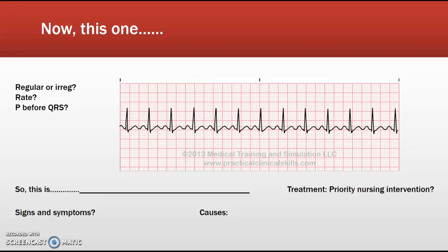Your priority here is again to check the patient and get vital signs. It's important to know how this rhythm is perfusing — is the patient able to maintain a blood pressure and a good mean arterial pressure? Then determine the cause and act accordingly. To slow the rate, you can use blocking agents like beta blockers or calcium channel blockers, or adenosine, which will stop conduction completely.